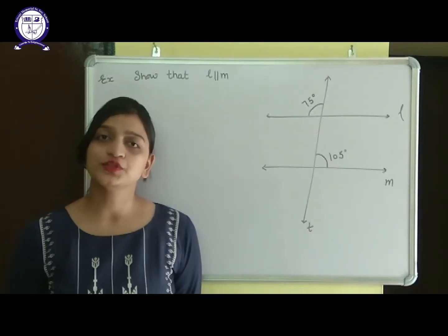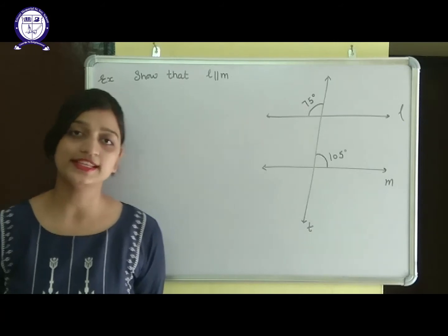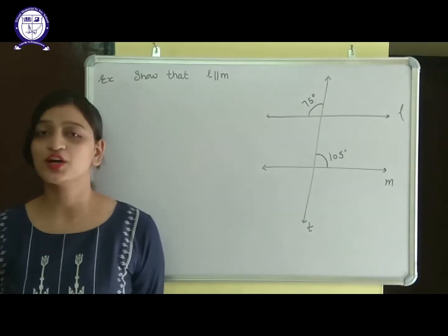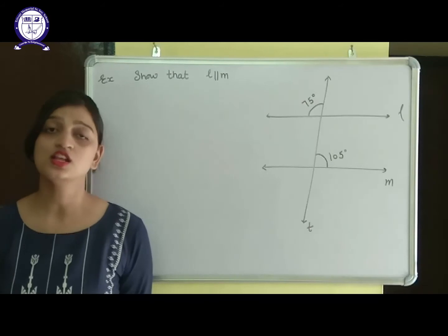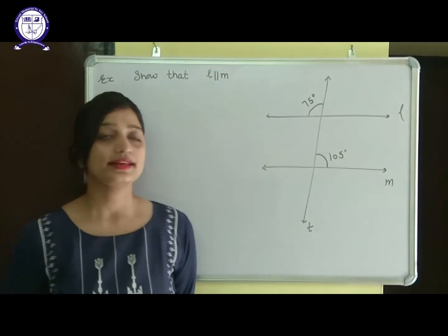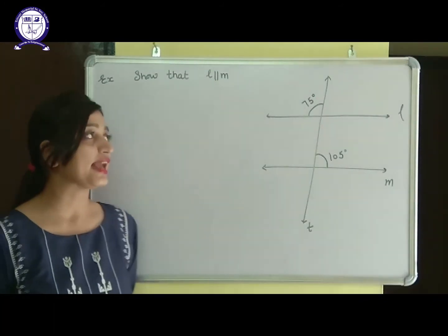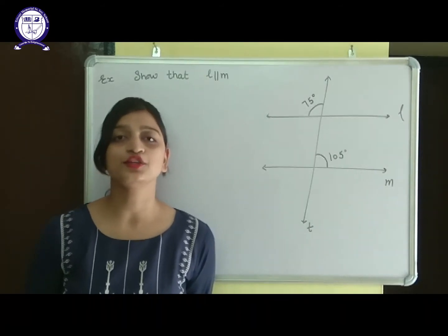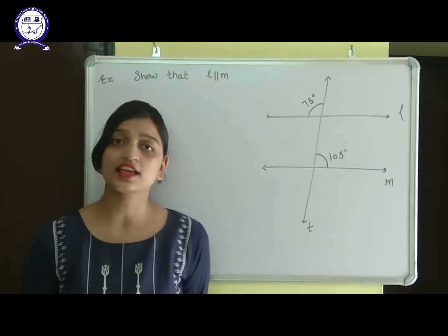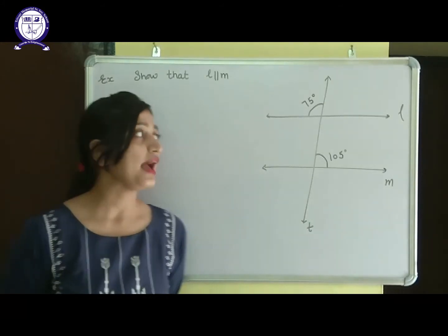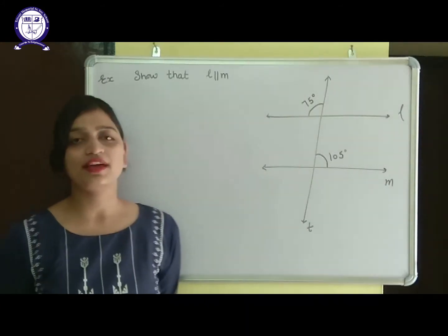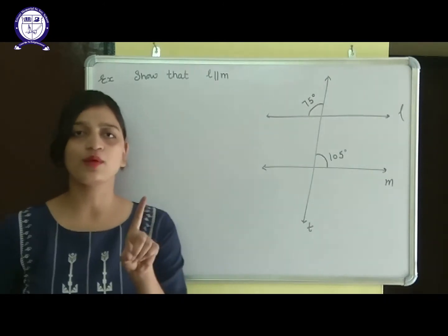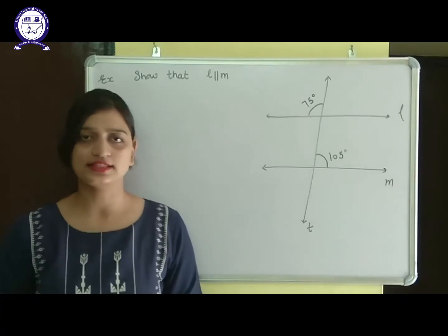All the rules we learned today — corresponding, alternate interior, alternate exterior, and co-interior — can be applied only when the question states that the lines are parallel. If the question doesn't say the lines are parallel, you cannot apply these properties. Now there is an example which is the exact opposite: the angles are given and we need to show that the lines are parallel.